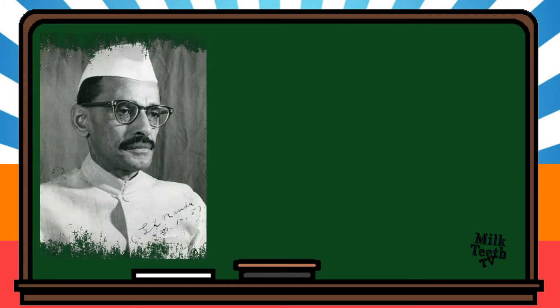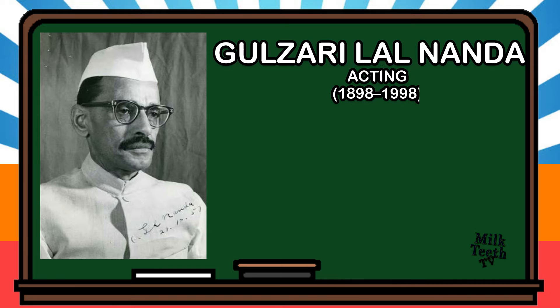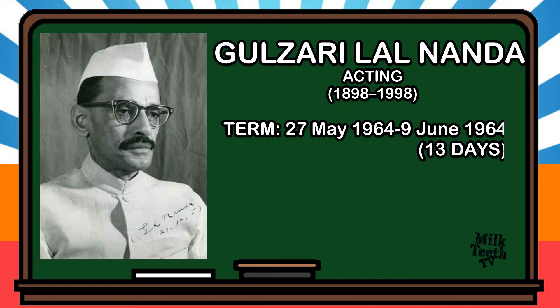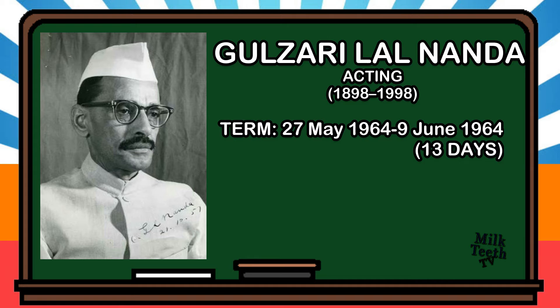Gulzari Lal Nanda was born in 1898. He is the first and only acting Prime Minister of India, and served as acting Prime Minister for a period of 13 days following the death of the then Prime Minister Jawaharlal Nehru. Party: Indian National Congress.